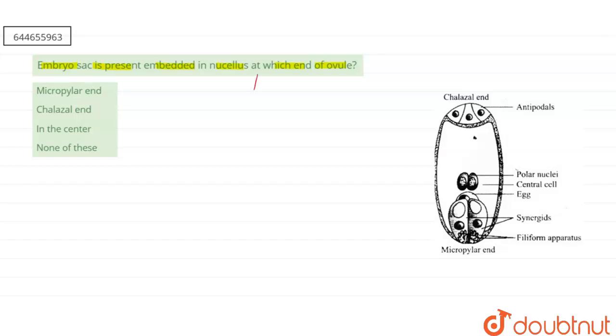If you are talking about angiosperms or the flowering plants, in angiosperms or the flowering plant, the female gametophyte, also called as the embryo sac, this female gametophyte...